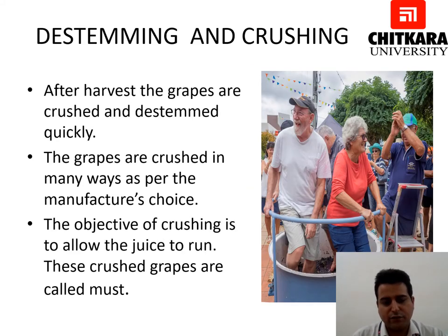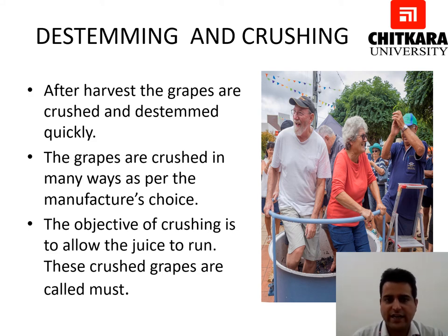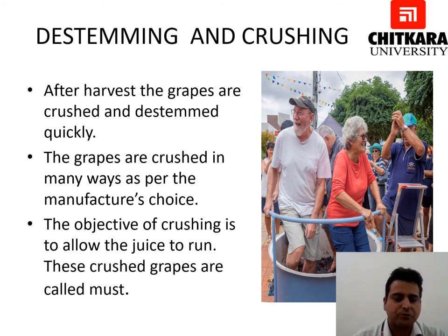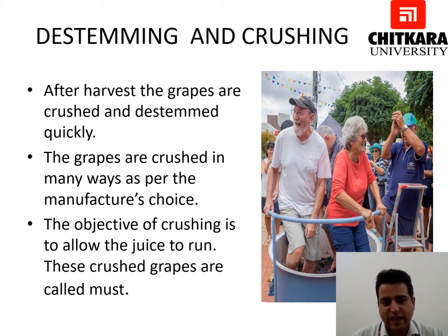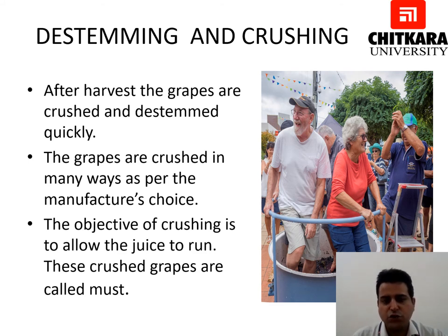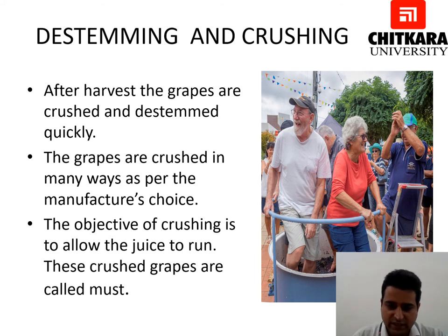The second step is de-stemming and crushing. After harvest, the grapes are crushed and de-stemmed quickly. De-stemming means removing the stem from the grapes. The grapes are crushed in many ways as per the manufacturer's choice — you can use the traditional method of foot pressing or mechanical methods. The objective of crushing is to allow the juice to run. These crushed grapes are called must.